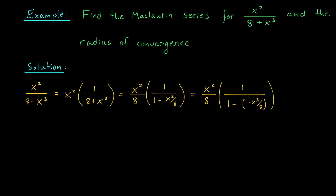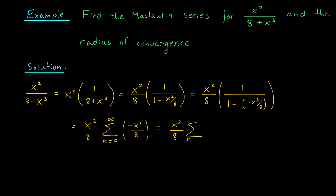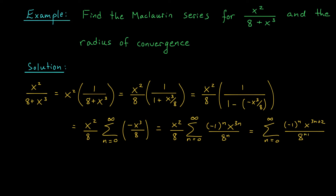Now we're in business. We can use the Maclaurin series for 1 over 1 minus x, but replace x with negative x cubed over 8. That gives me x squared over 8 times the sum from n equals 0 to infinity of negative x cubed over 8 to the n. Expanding, I get x squared over 8 times the sum from n equals 0 to infinity of negative 1 to the n, x to the 3n, divided by 8 to the n. Bringing these back inside, my final Maclaurin series is the sum from n equals 0 to infinity of negative 1 to the n, x to the 3n plus 2, over 8 to the n plus 1.